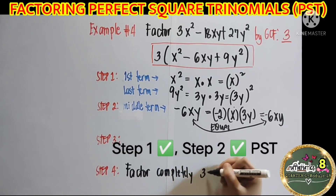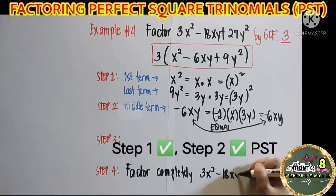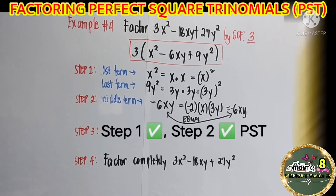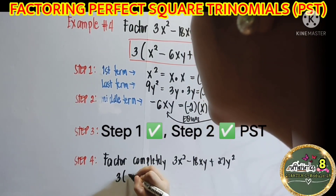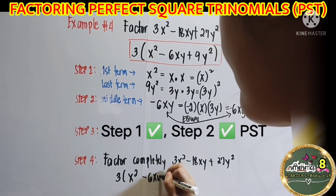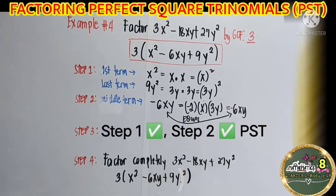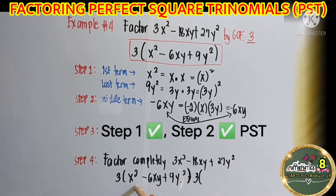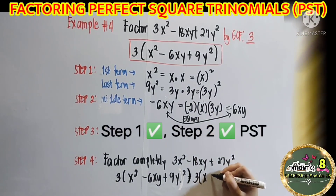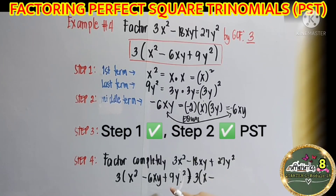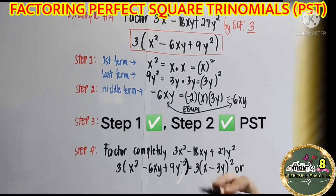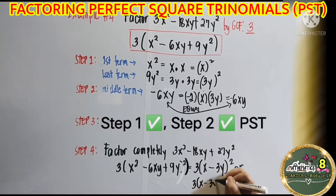Step 4: factor completely 3x squared minus 18xy plus 27y squared. This equals 3 times the quantity of x squared minus 6xy plus 9y squared, which equals 3 times the quantity of the square root of the new first term, which is x, minus the square root of the new last term, which is 3y, and then square the binomial. Or you can express your answer as 3 times the quantity of (x minus 3y) times the quantity of (x minus 3y).